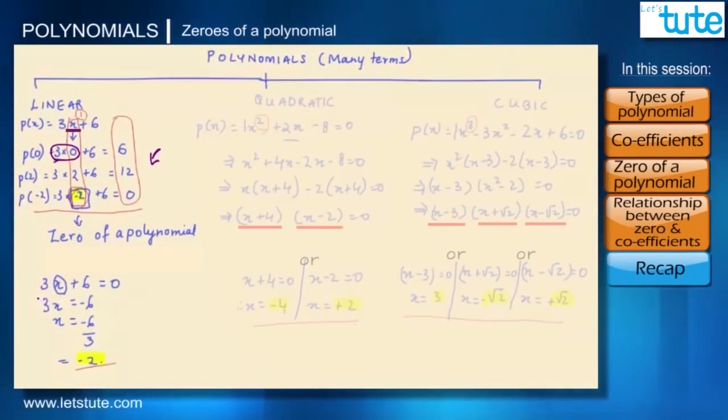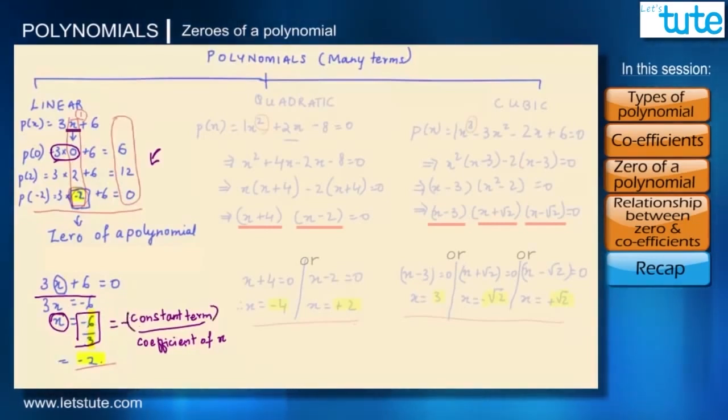When we were finding the zeros for this linear polynomial 3x plus 6, what we actually did was we got this variable in terms of its coefficients. If you take a close look, 6 is nothing but the constant term and 3 is nothing but the coefficient of x. The constant term is 6 and we've got minus 6 so it is minus of constant term upon coefficient of x.